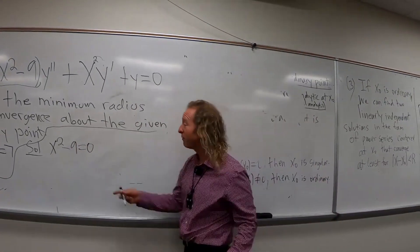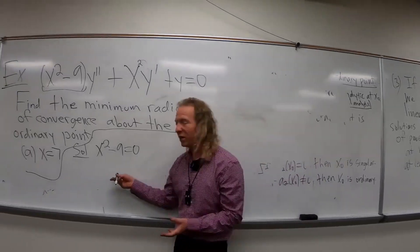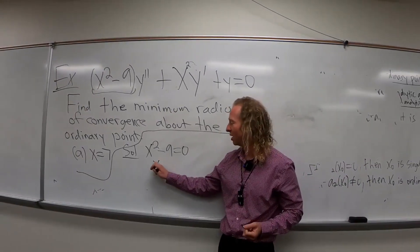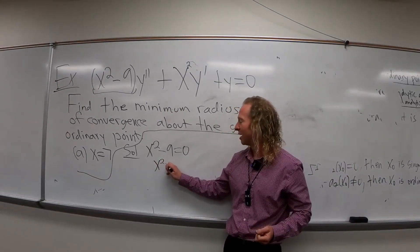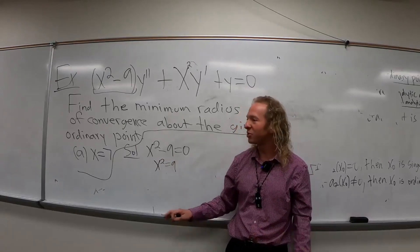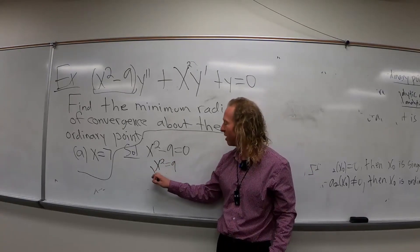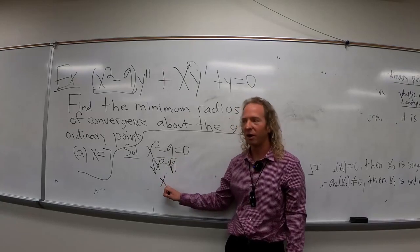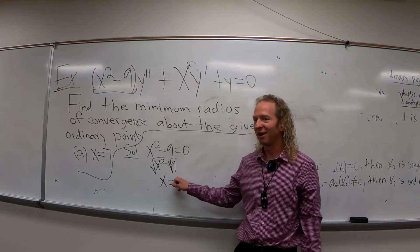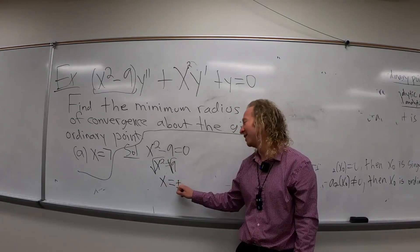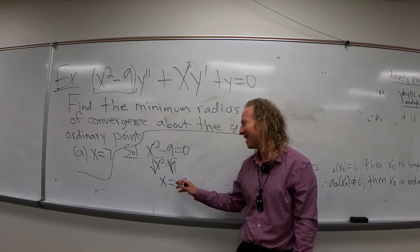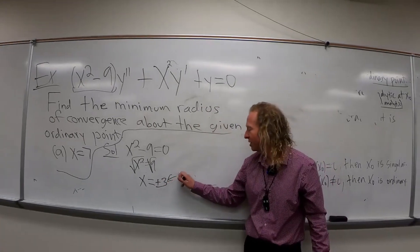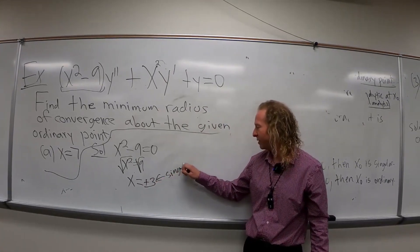Then we just have to solve this. We could factor, or we could live dangerously and add the nine. So let's add nine. Why is this living dangerously? Because sometimes when you do this, people forget to put the plus or minus. So these are the singular points.